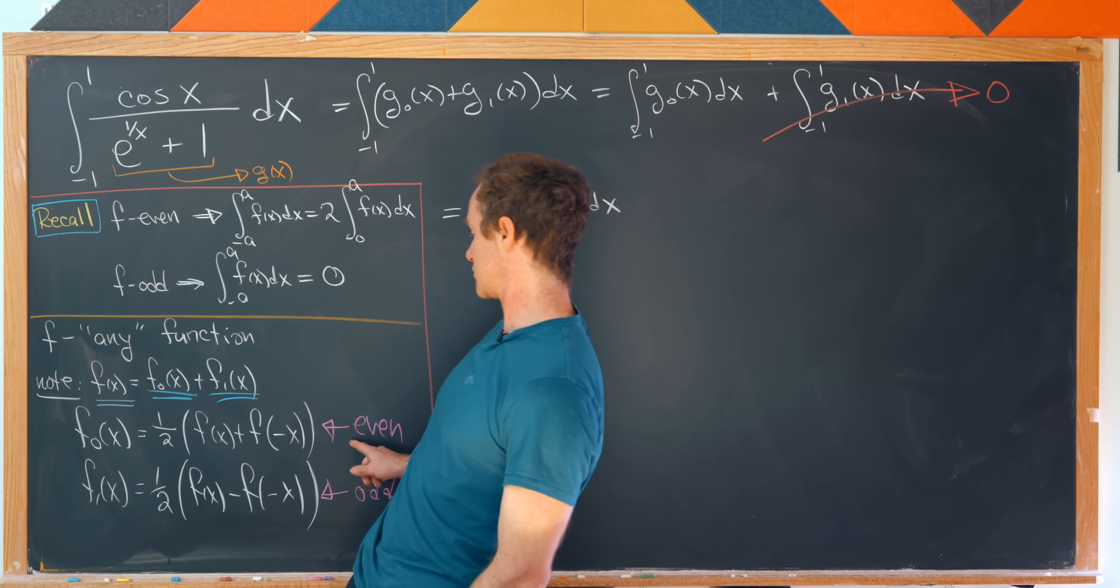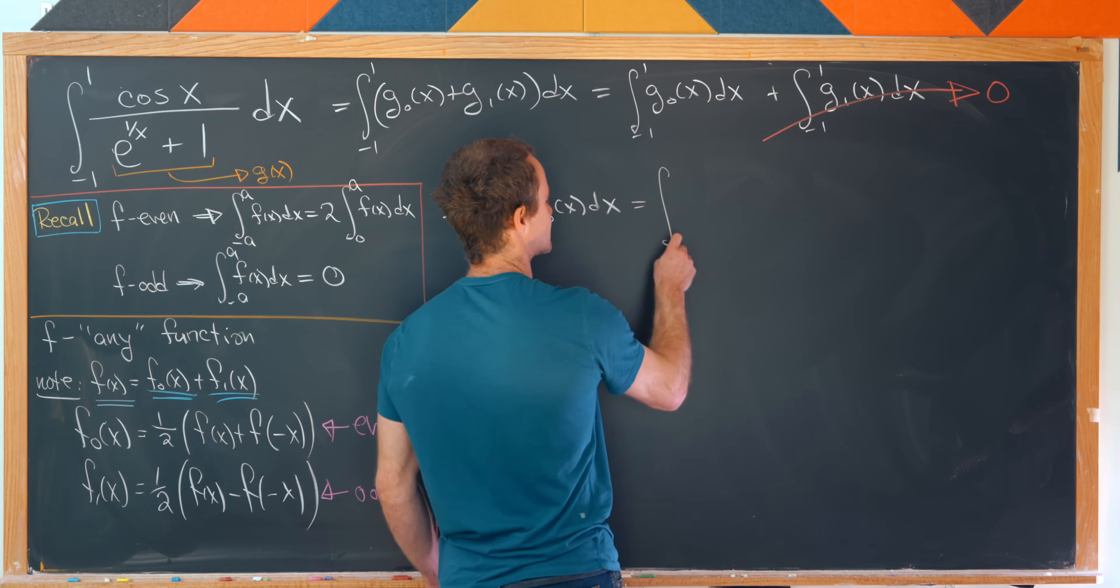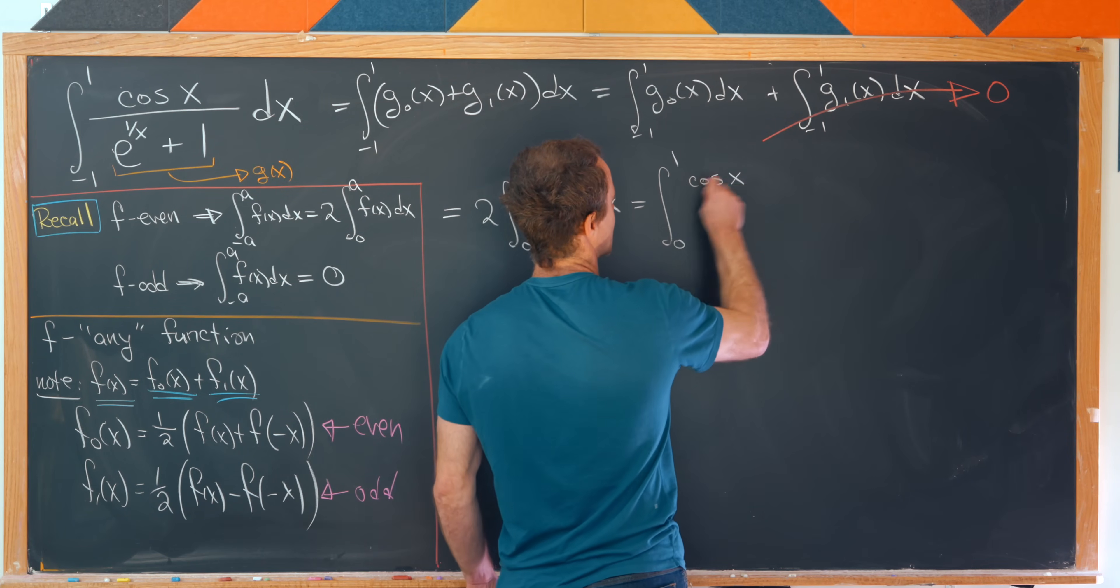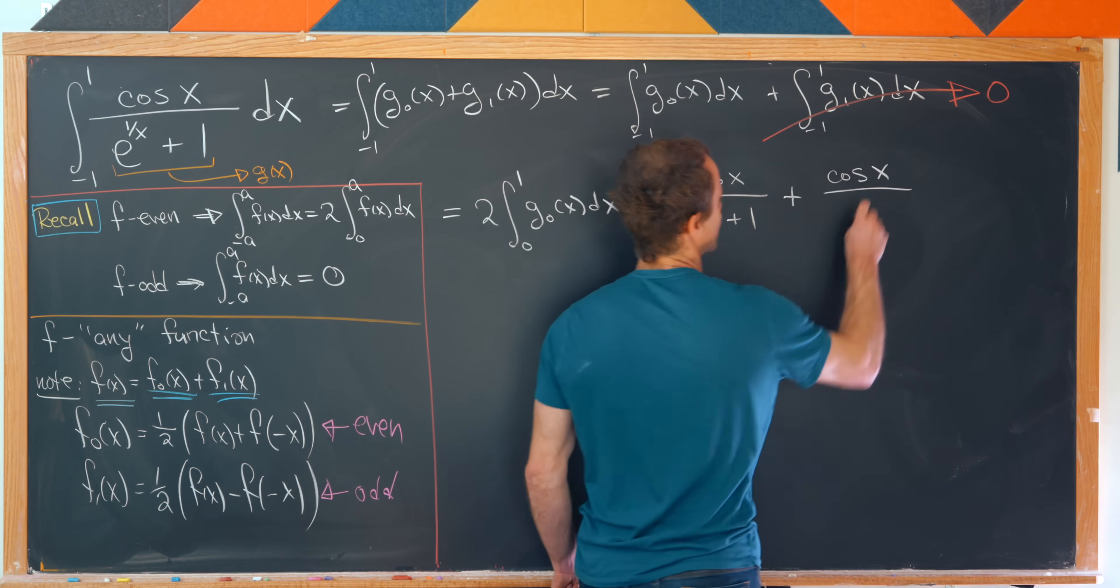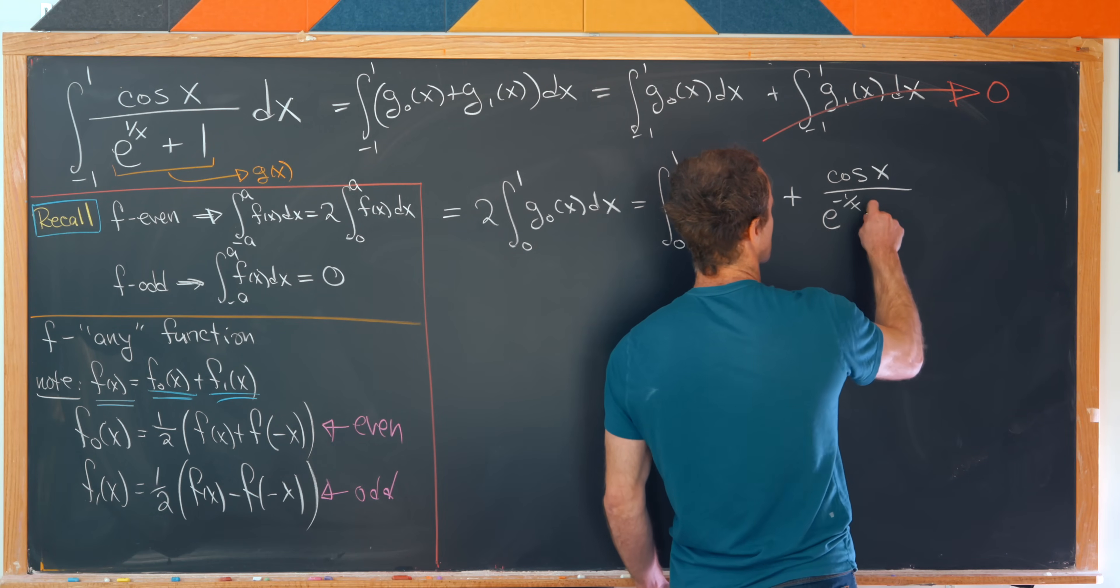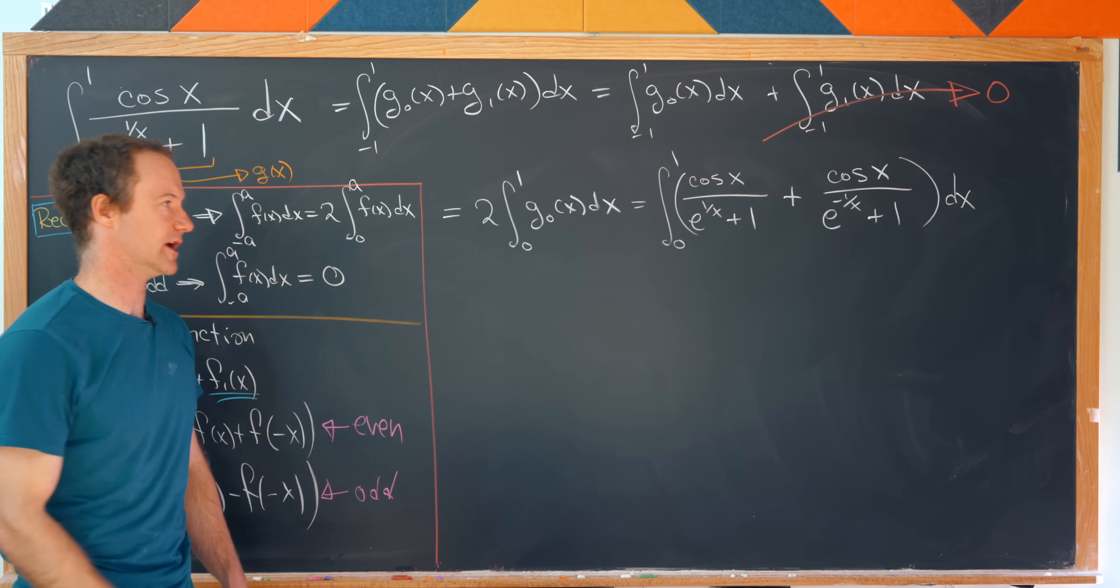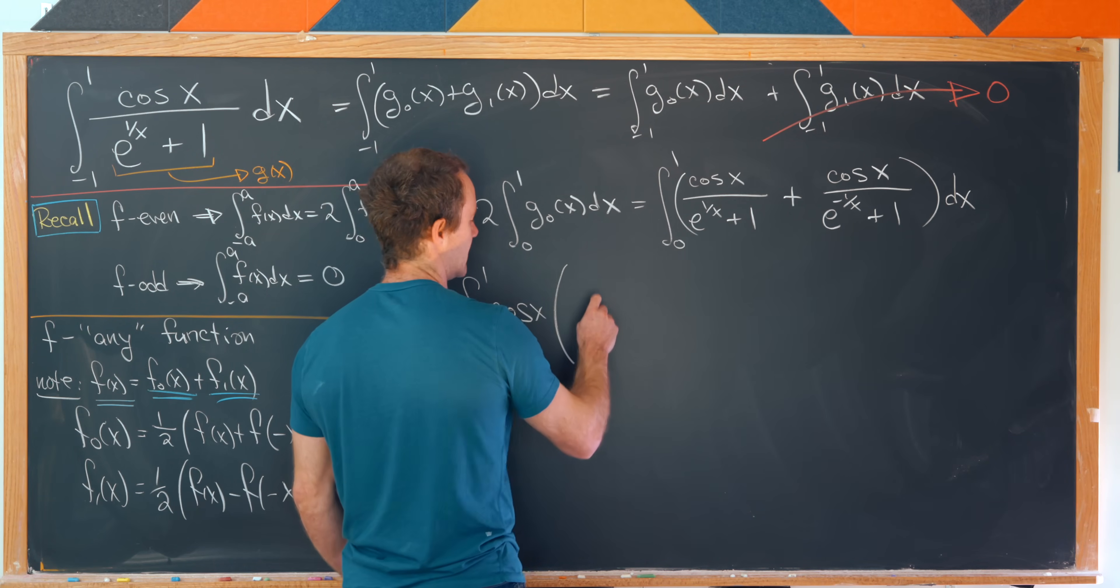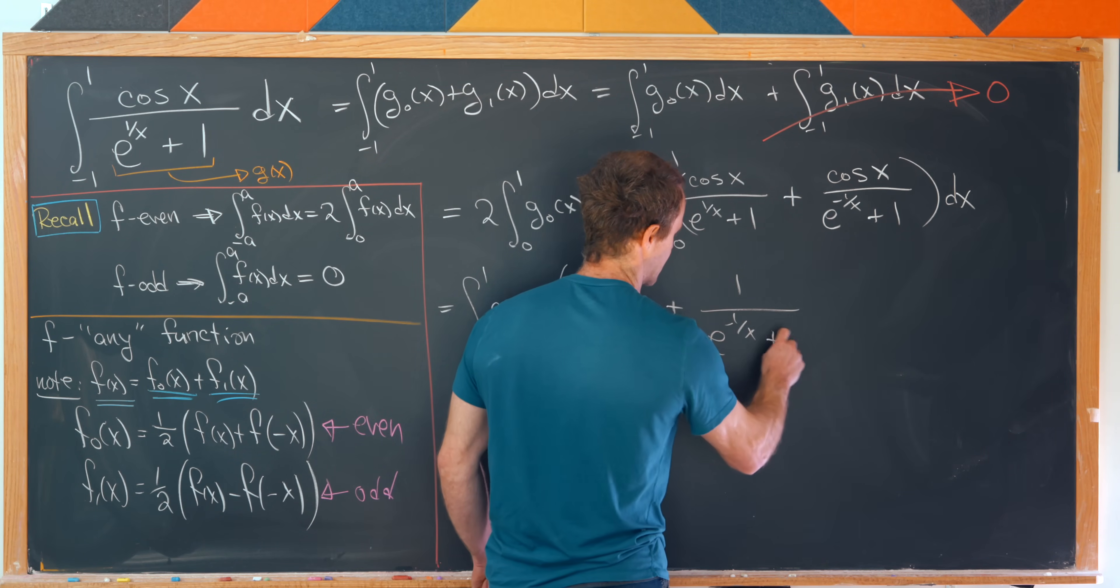And now we'll apply this rule for constructing G zero. Notice the rule has a half built in that will cancel this two. And that will leave us with the integral from zero to one of G evaluated at X, which is simply the cosine of X over E to the one over X plus one plus G evaluated at negative X. That gives us cosine of negative X, but the cosine function is even itself. So that's just cosine of X again. And then this is going to be over E to the minus one over X plus one like that. Great. So now what I'll do is I'll factor a cosine out of that numerator and then we'll get to combining some things. So we have the integral from zero to one of the cosine of X and then we have one over E to the one over X plus one plus one over E to the minus one over X plus one dx.